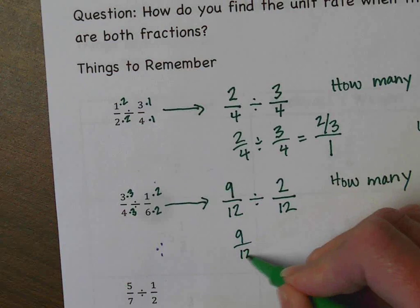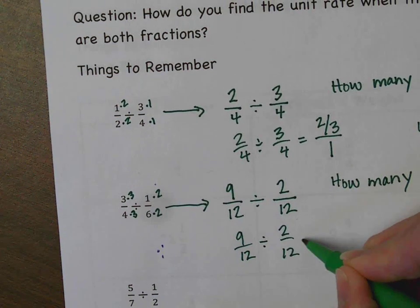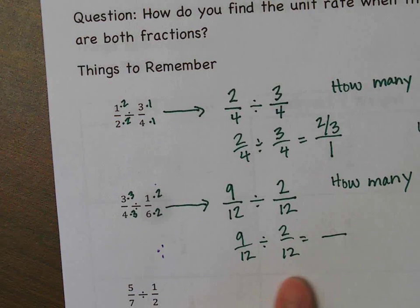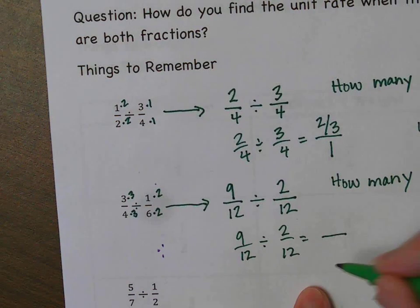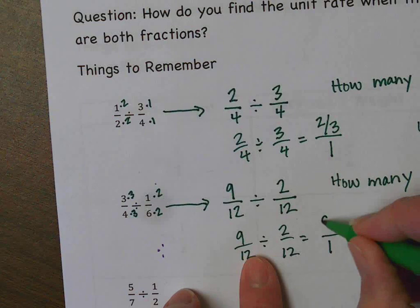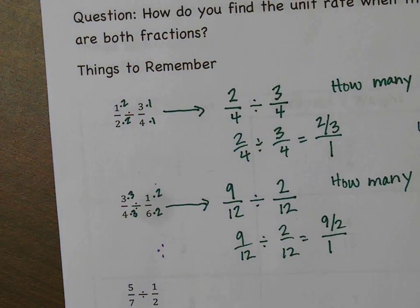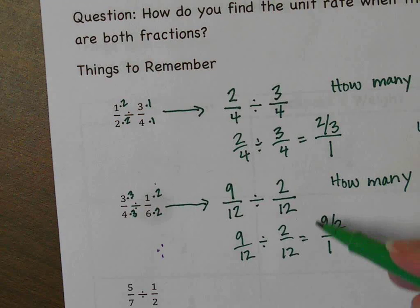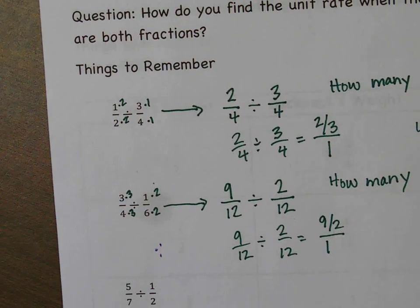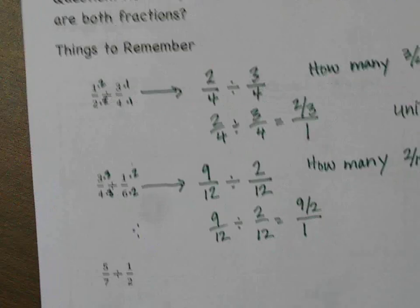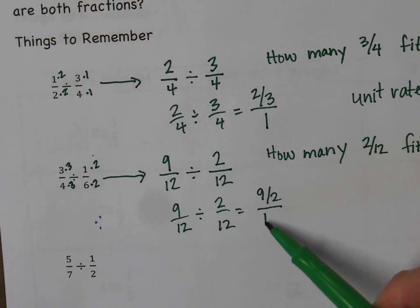That's easy. We take 9 twelfths divided by 2 twelfths and divide straight across: 12 divided by 12 is 1, and 9 divided by 2 is 9 halves, which is 4 and a half. So 4 and a half groups of 2 twelfths fit into 9 twelfths. This is our unit rate, because the unit rate is an amount per 1 — and we found the unit rate.